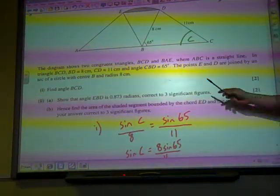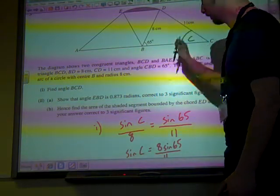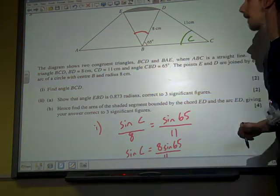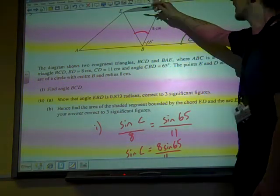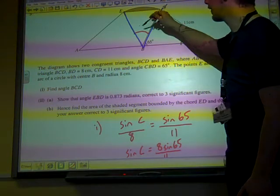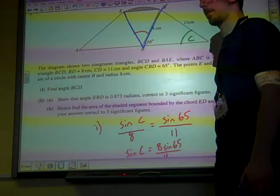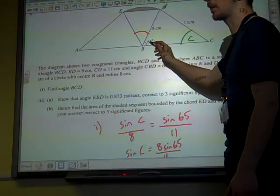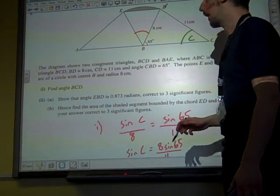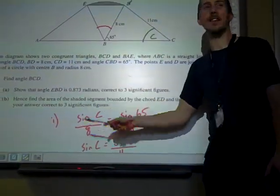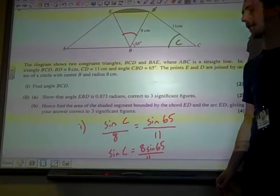Part two says show that the angle EBD, so now we're on this angle here. How do you know EBD is that angle? Because it's the angle that goes from E to B to D. Why don't you say angle B? Because angle B could be that one there, which is 65. But that's angle DBC.